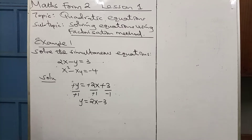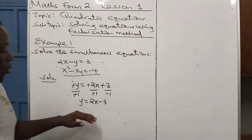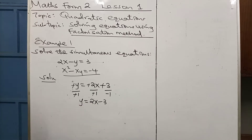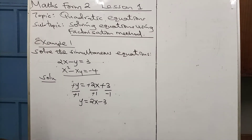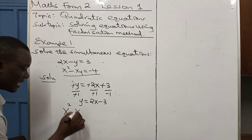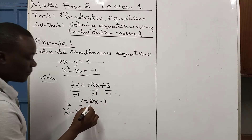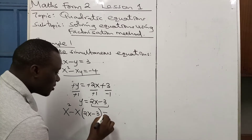Now let us go to the second equation. In the second equation, we will remove y and replace it with the value we found: 2x minus 3 represents y, so wherever there is y we substitute it with 2x minus 3 — that is what we call the substitution method. So you will see me writing: x squared minus x, then opening the bracket with 2x minus 3 instead of y, equals minus 4.